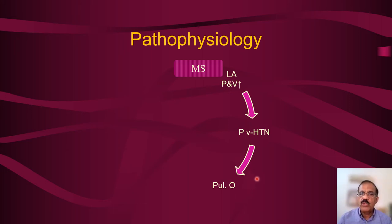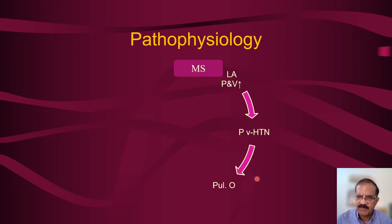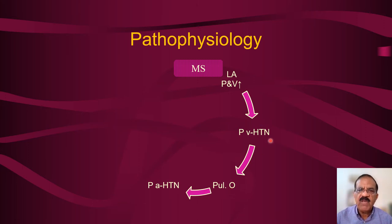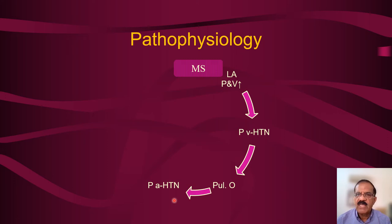Pulmonary edema is the oozing of fluid from the blood into the pulmonary interstitium and alveoli, which impairs pulmonary ventilation and causes very severe dyspnea. It also translates into classical radiological signs. Hopefully the patient will receive medical treatment and recover, but only to go into pulmonary edema again if they do not receive proper long-term treatment. As a result of pulmonary venous hypertension, pulmonary arterial hypertension develops — first by vasoconstriction of arterial walls, then hypertrophy, then fibrosis.